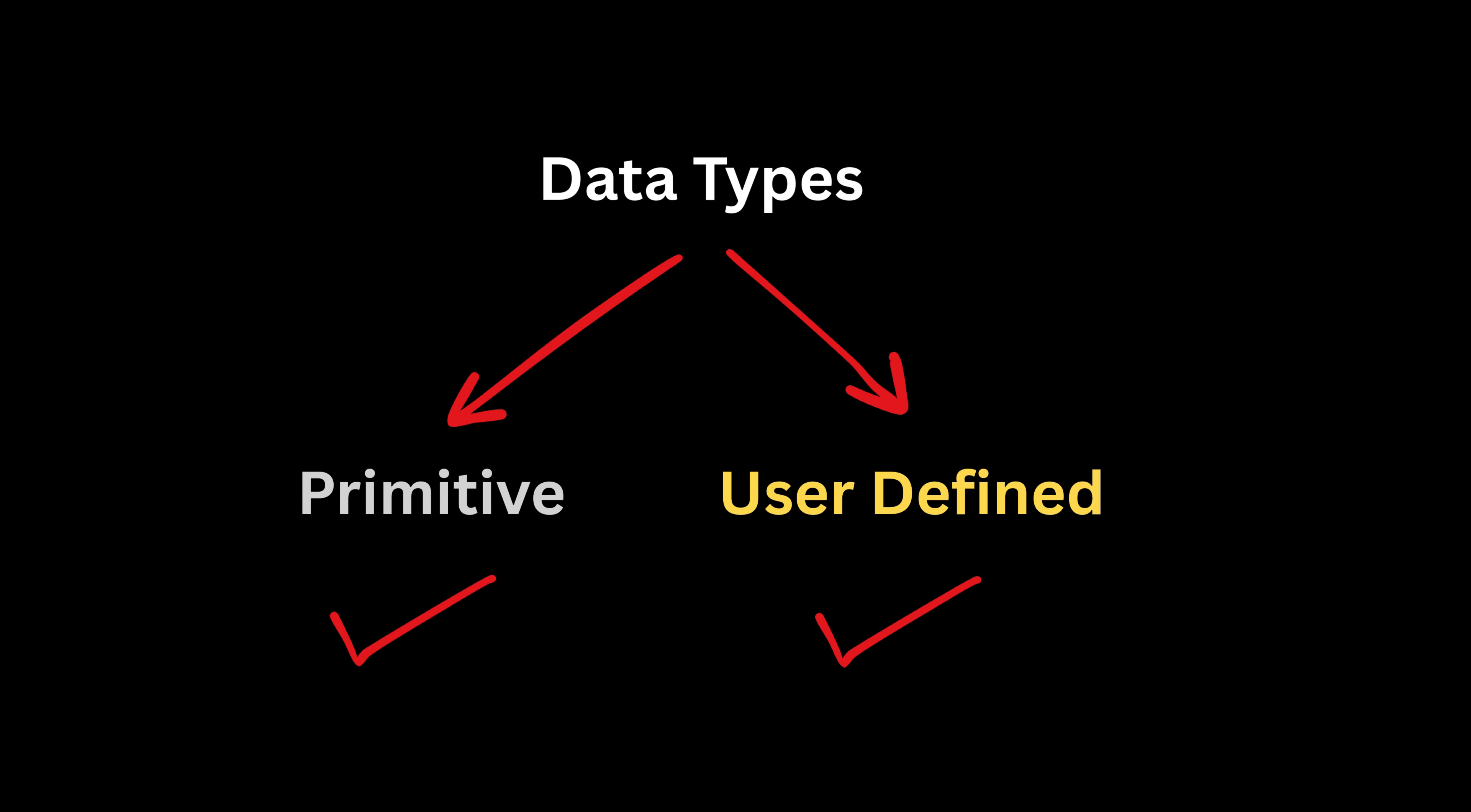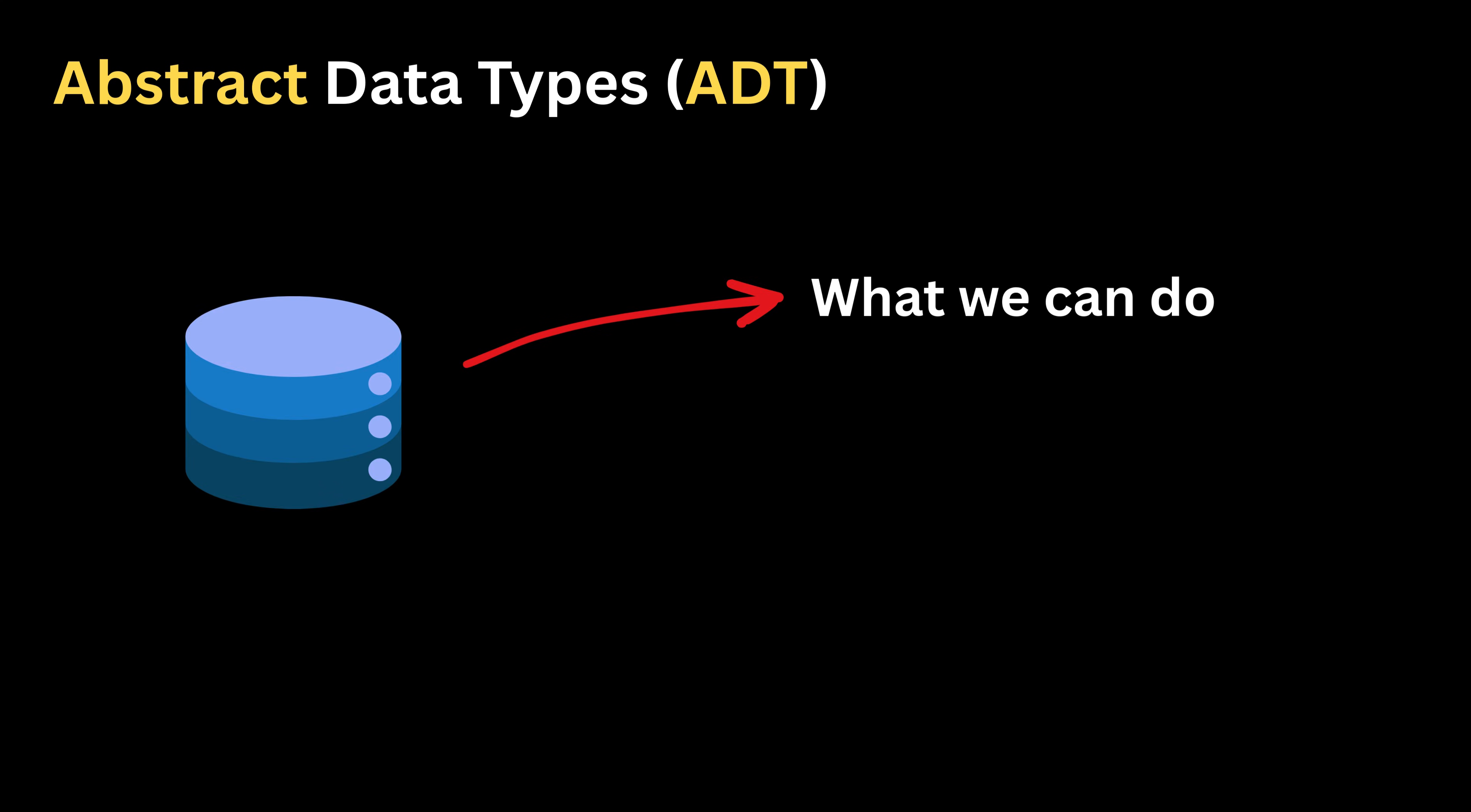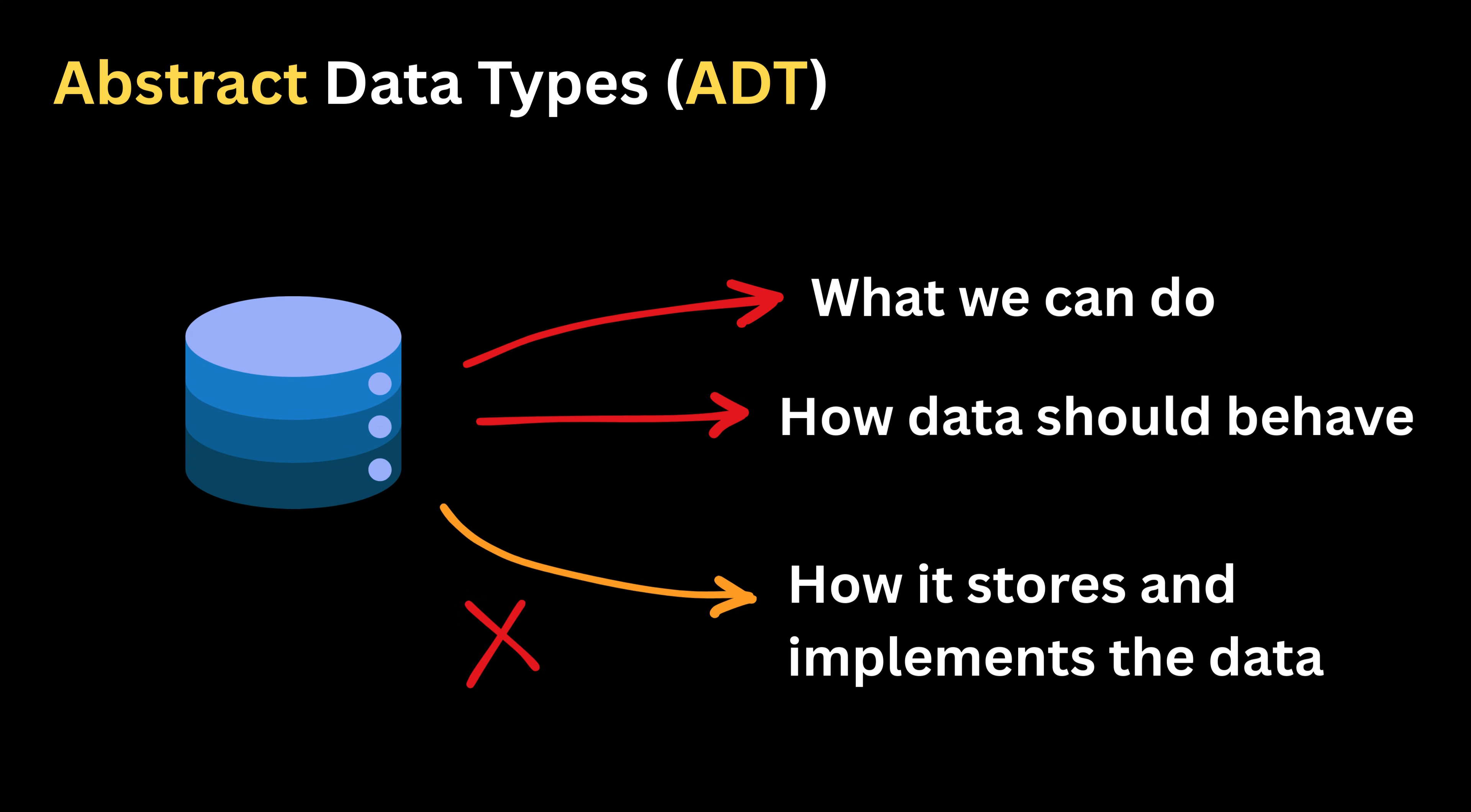Once primitive and user-defined data types are understood, we will now move to abstract data types. An abstract data type, or ADT, tells us what we can do with the data and how it should logically behave, but it does not reveal how the computer actually stores the data. This separation makes ADTs extremely powerful because it lets us think at a higher level without getting lost in low-level technical details.